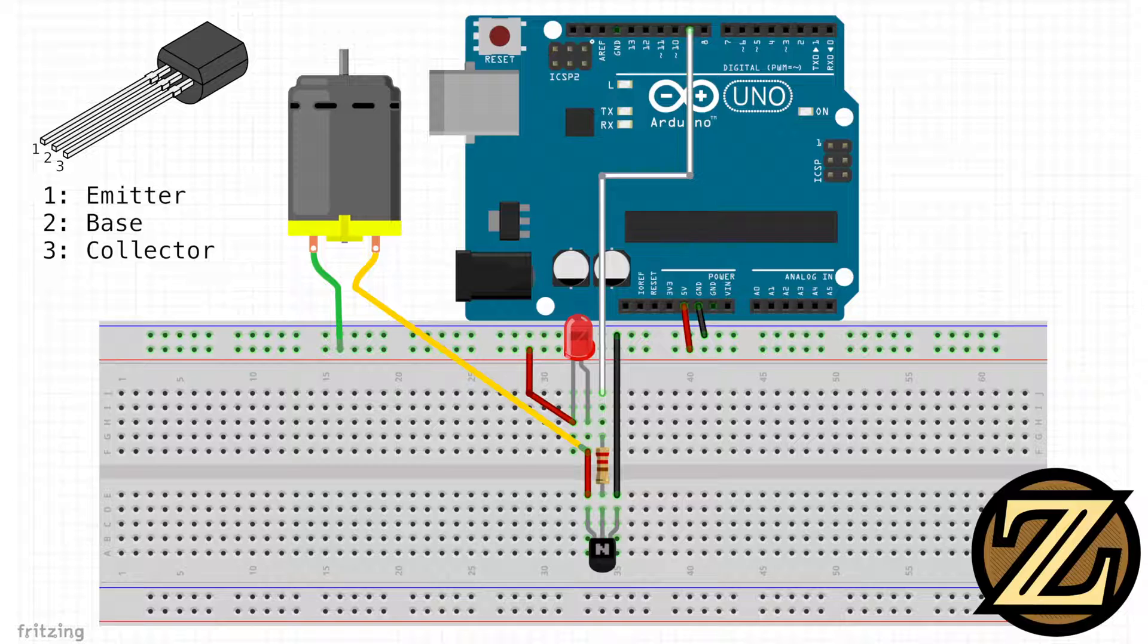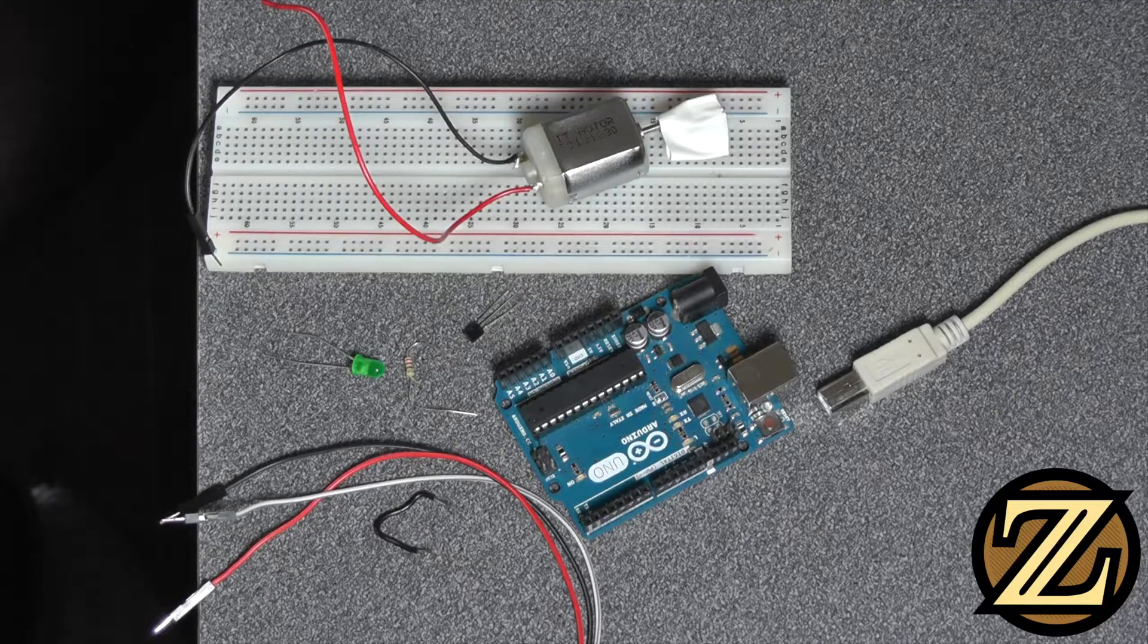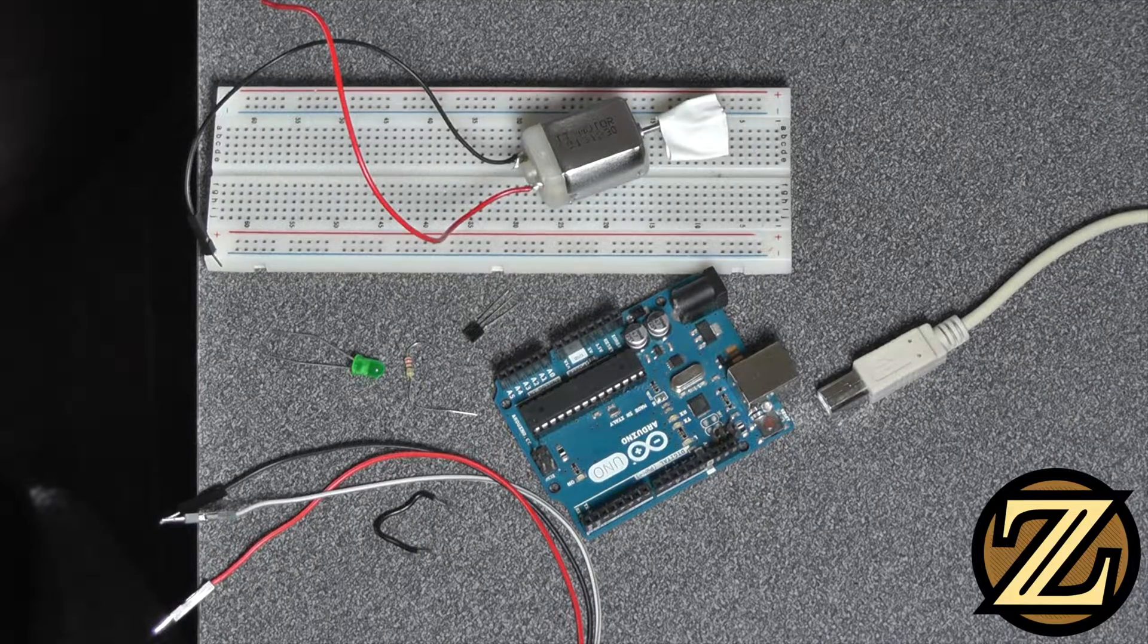Connect the base to digital 9 via 220 ohm resistor. Connect the emitter to ground. Connect the collector to the low side of the motor. The other end of the motor should be connected straight to 5 volt. The LED should allow current to flow from the low side of the motor back to 5 volt. Let's go ahead and get this all wired up.